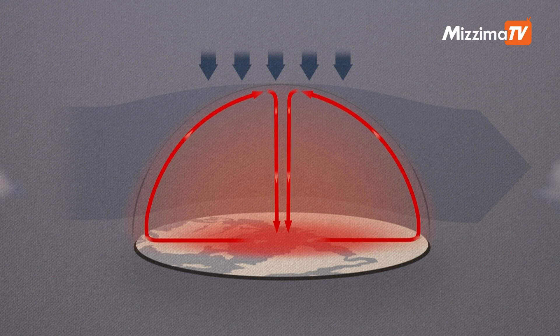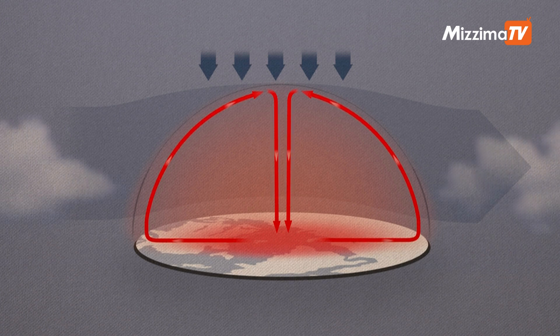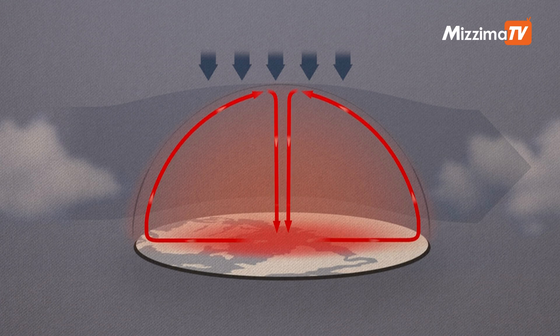The dome also blocks clouds, preventing them from shielding the ground from the sun. This cycle of warm air movements perpetuates day after day, causing a heat wave.